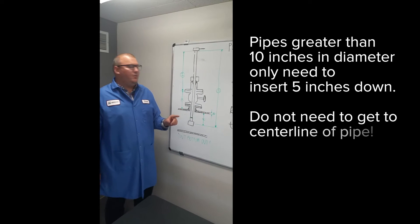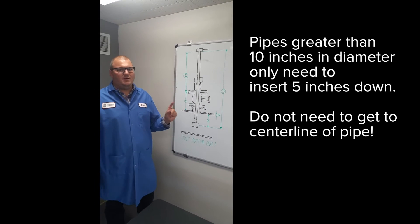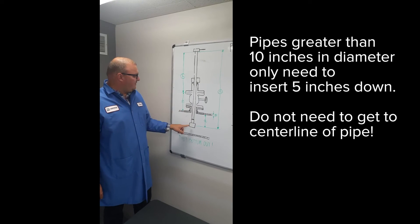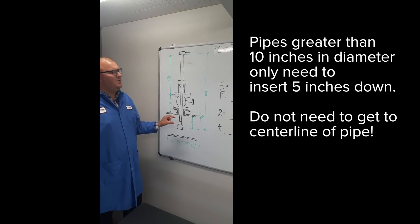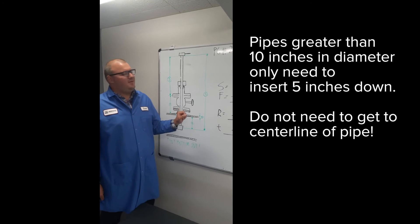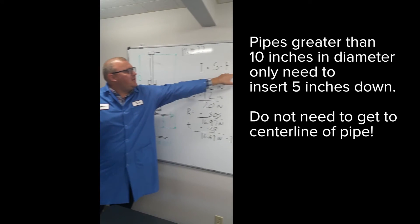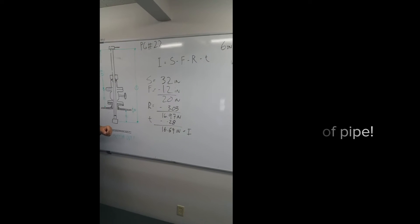It's important to note when inserting into pipes greater than 10 inches that instead of trying to get to the center line of the pipe, we just want to insert 5 inches down. In those cases, you replace your R value with 5 inches and that's clearly stated in the manual.